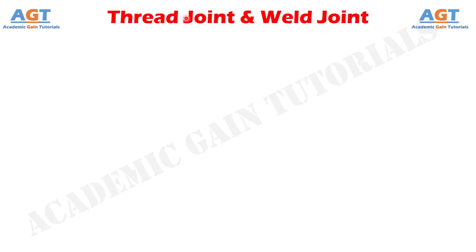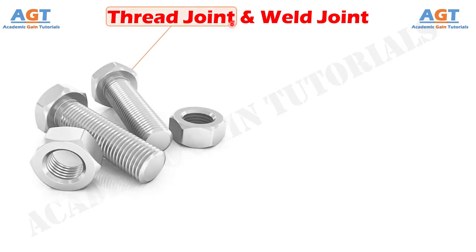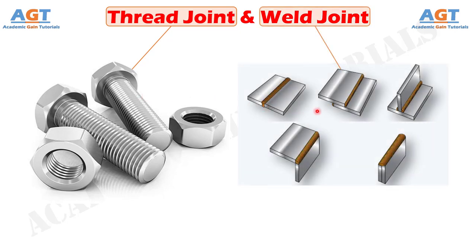Joining can be performed either mechanically or chemically. A mechanical joint can be either temporary or permanent. Thread joining requires drilled holes on the components for the passage of bolts or screws. On the other hand, welding is another mechanical joining process that requires application of either external pressure or heat in order to form a coalescence or weld bead to permanently join two or more components together.